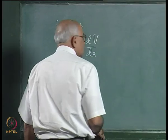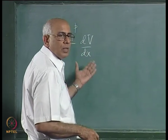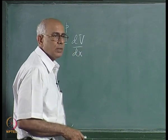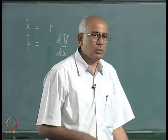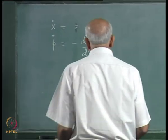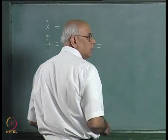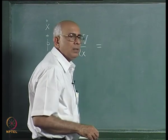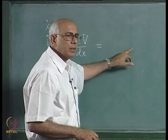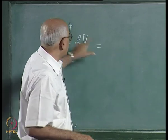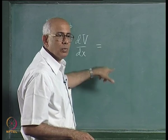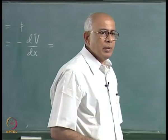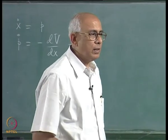The simplest form for the force would be a constant plus a linear term in x — a plus bx. But this gives only a single critical point at p equal to zero and x equal to minus a over b, with no possibility of bifurcation or coalescence of singularities.